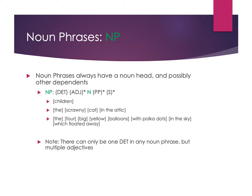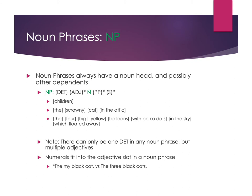There can only be one determiner in a noun phrase, even though we can have multiple adjectives. Numerals are interesting — they can sort of fit into a determiner-like place, but they also fit into the adjective slot. So 'the my black cat' doesn't work because it has two determiners. But 'the three black cats' works because the numeral three functions more as an adjective. Even though numerals are in some ways a kind of determiner, they don't fit the same requirements that other determiners would have.